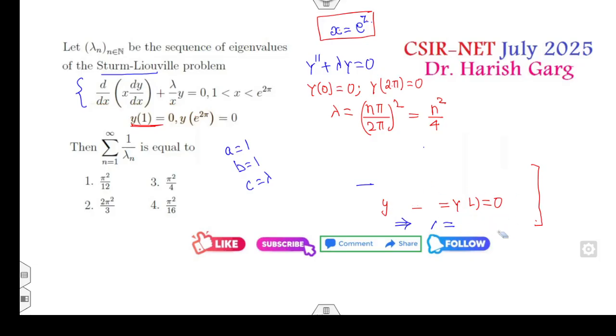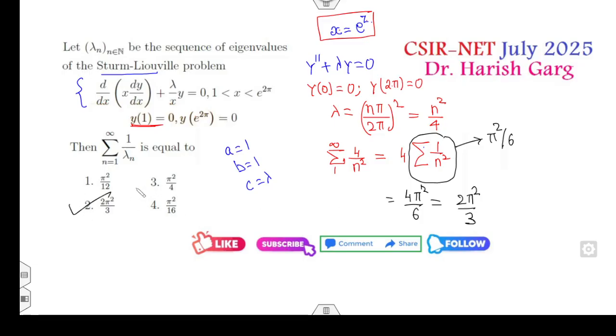Now you can substitute in the given requirement. Your target is to find Σ(1/λₙ) where n varies from 1 to infinity. It's 4/n². 4 is outside, summation 1/n². Do you know the value of 1/n² is always π²/6? So answer is 4π²/6 = 2π²/3. That is the second option, my right answer of the problem.